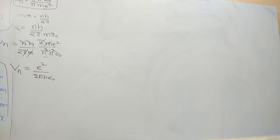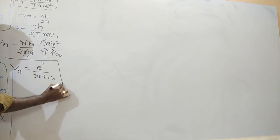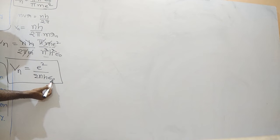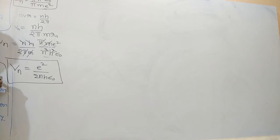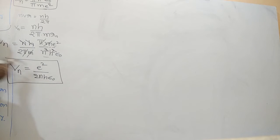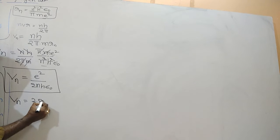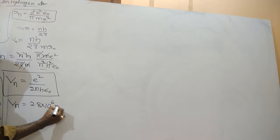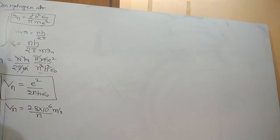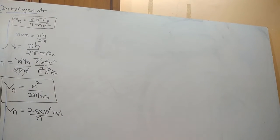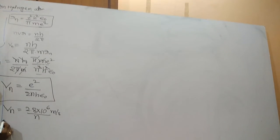This is the value we got: velocity of the electron in the nth orbit vn = e² / (2nħε₀). In this equation, e, h, and ε₀ are all constant terms, as explained in the previous class. Substituting those constant values, you will get vn equal to 2.8 × 10⁶ meters per second divided by n. This is the velocity of the electron in the nth orbit.